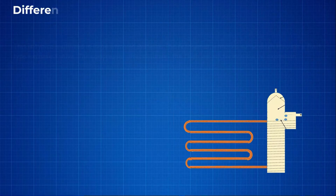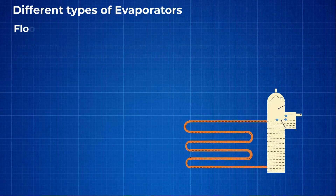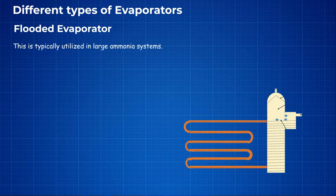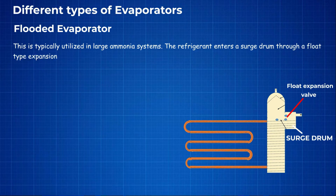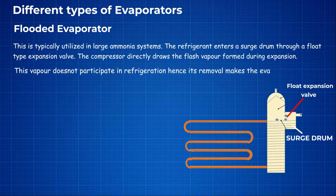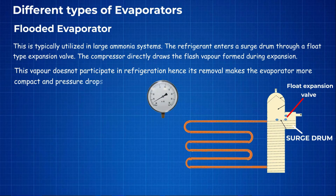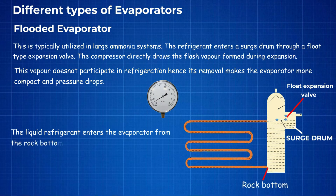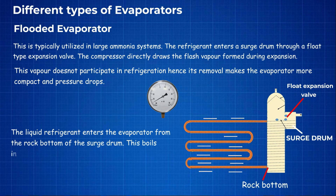Different types of evaporators: Flooded evaporator — this is typically utilized in large ammonia systems. The refrigerant enters a surge drum through a float type expansion valve. The compressor directly draws the flash vapor formed during expansion. This vapor does not participate in refrigeration, hence its removal makes the evaporator more compact. The liquid refrigerant enters the evaporator from the bottom of the surge drum.